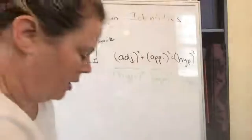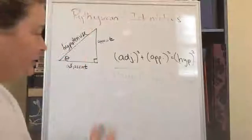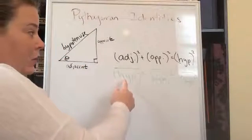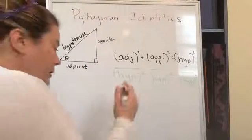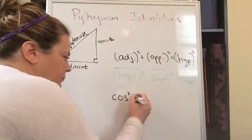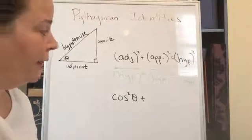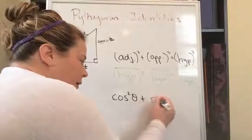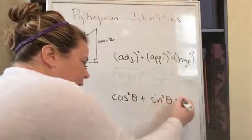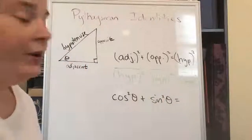Okay, so what do we have? We have adjacent over hypotenuse, which we know is cosine. Then we have opposite over hypotenuse squared. We know that is sine. And we have hypotenuse over hypotenuse, each being squared, and we know that's equal to one.